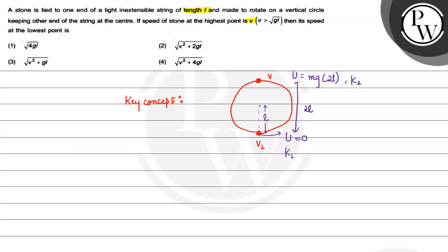Using energy conservation between point A at the top and point B at the bottom. In point A, potential energy is Mg into 2L plus kinetic energy is half M V squared. This equals point B kinetic energy, which is half M V1 squared. The potential energy at B is 0.